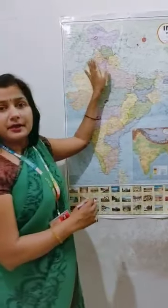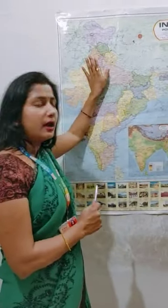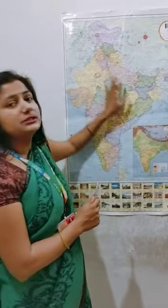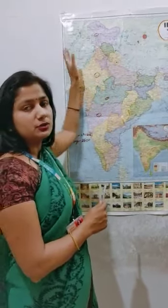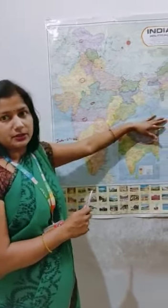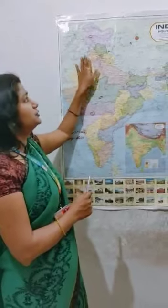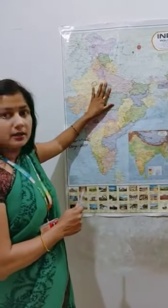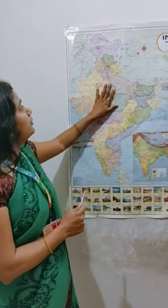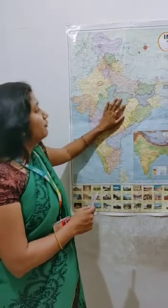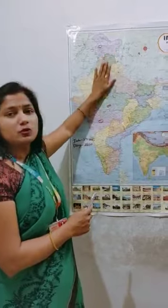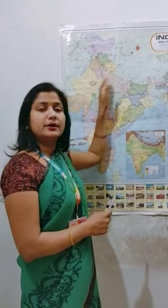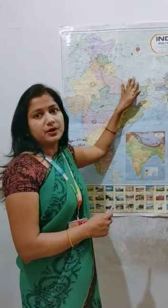The Gangetic Plain is very fertile and it stretches from west to east — from Punjab in the west to Assam in the east. The land is very fertile. We have three main rivers: the Satluj, the Ganga, and the Brahmaputra.